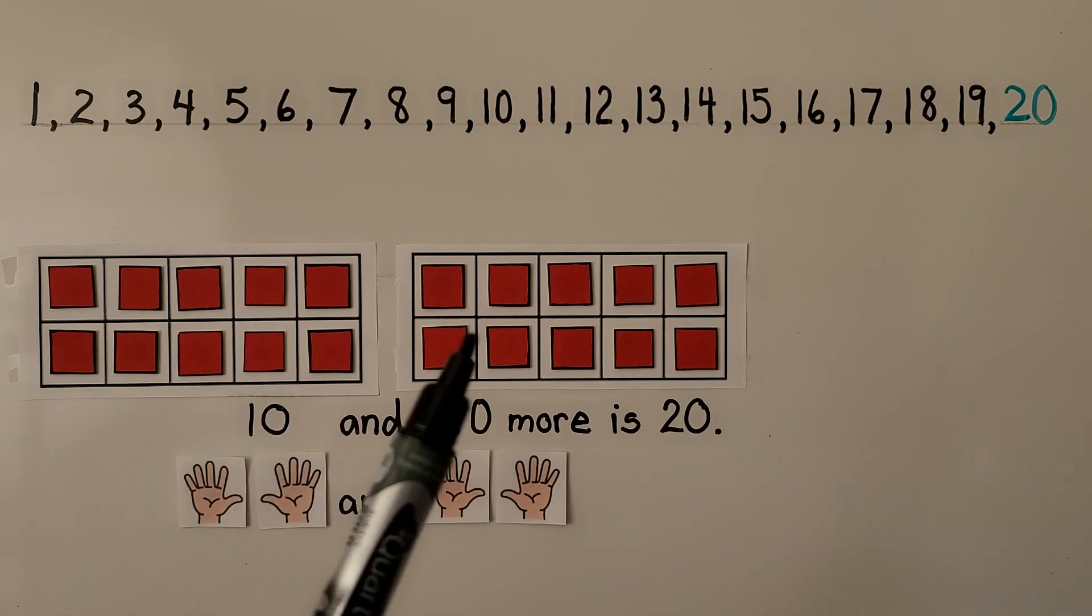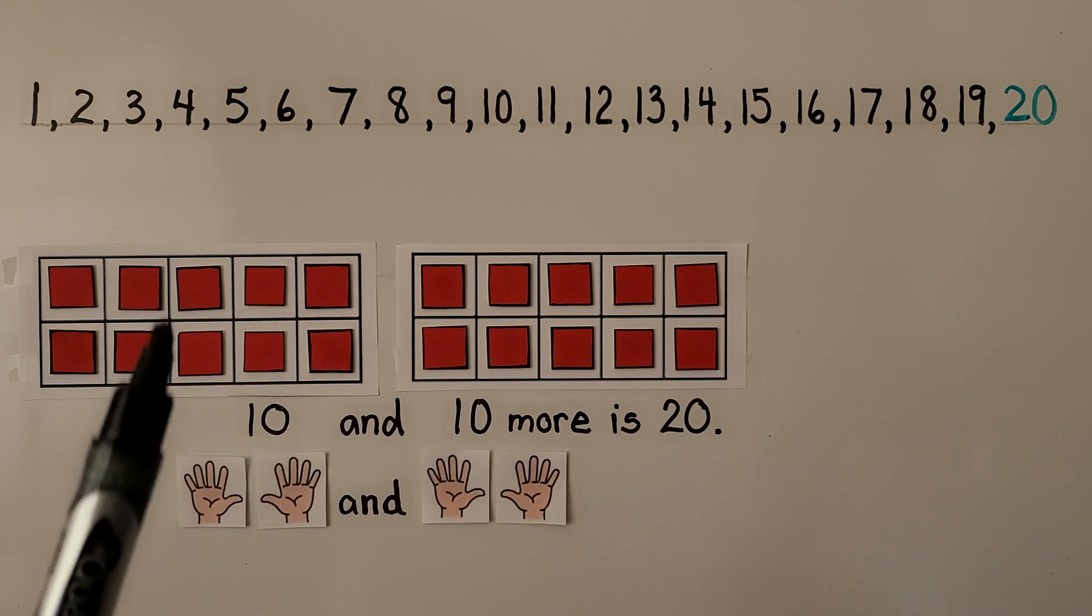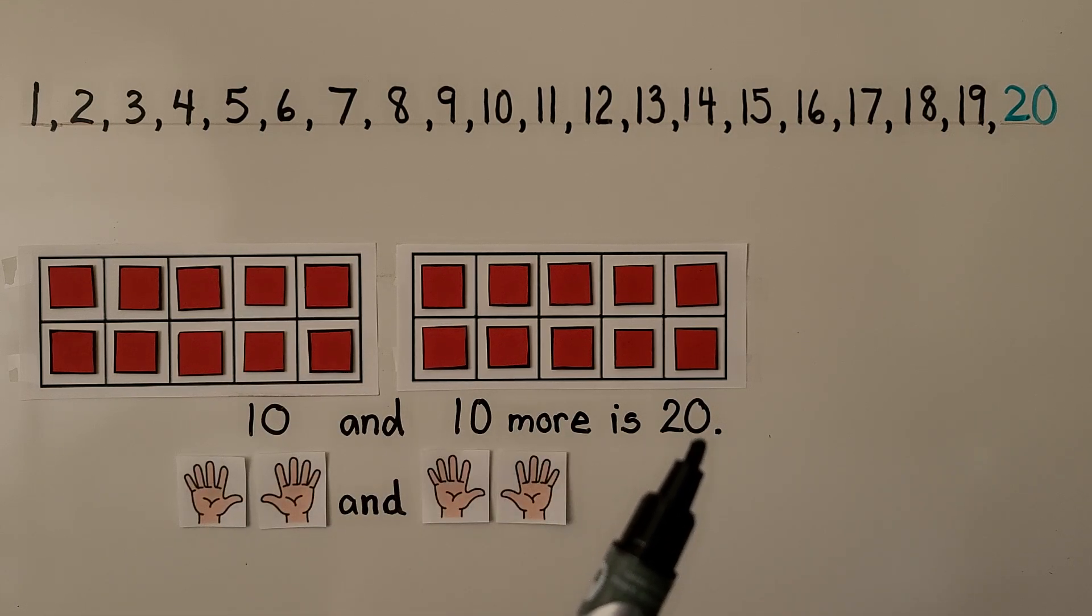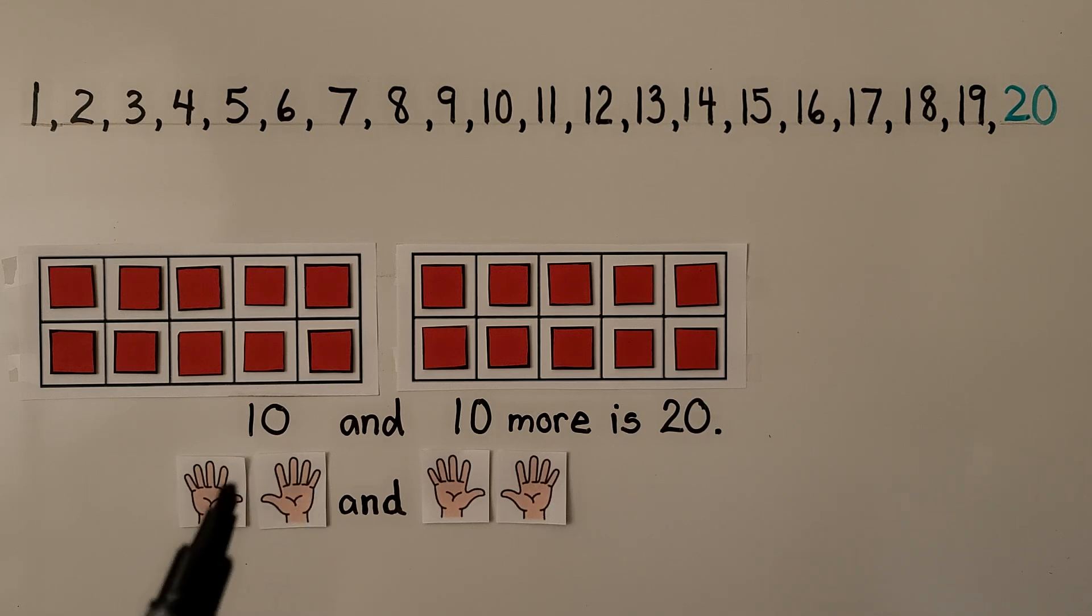Here we have two full ten frames. There are two tens in 20. 10 and 10 more is 20. We have 10 fingers and 10 more fingers. There's 20. There are two tens in 20.